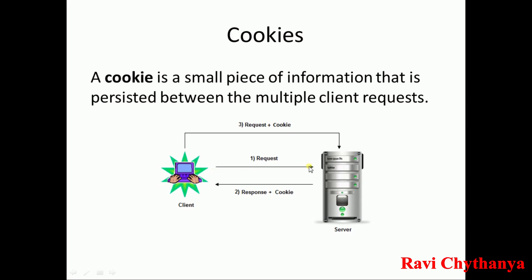For example, on the first request — which is a new request — the server sends the response along with a cookie to the client. The next time the client sends a request, it sends that request along with the cookie to the server, maintaining the user's information.